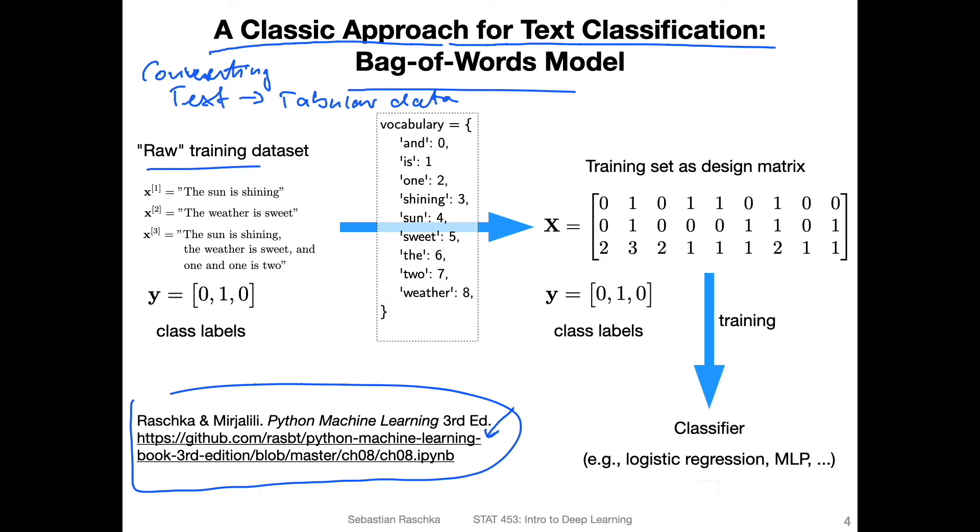So how does it work? Let's look at this. So on the left-hand side, what I was writing down here is a raw training dataset, just an example dataset here, consisting of three training examples. So x1, x2, and x3, these are three training examples. The first training example is a text, for example, 'the sun is shining.' The second training example is a text, 'the weather is sweet.' And the third one is a text saying 'the sun is shining, the weather is sweet, and one and one is two.' So this is like an example of a text dataset. And for that, we also have, let's say corresponding class labels. The class labels here are not important, except of course, this is a classification problem. But here, we are only focusing on the features in the bag-of-words model. The class labels are treated like in any other classification example.